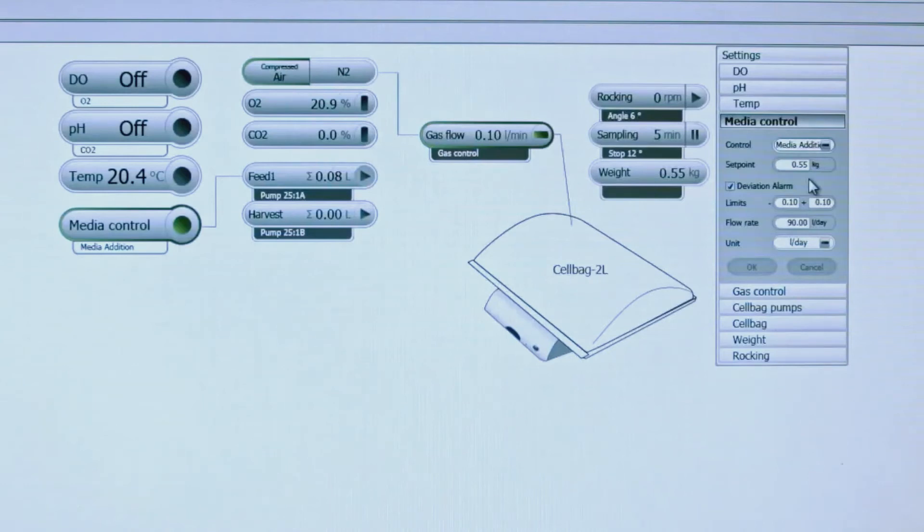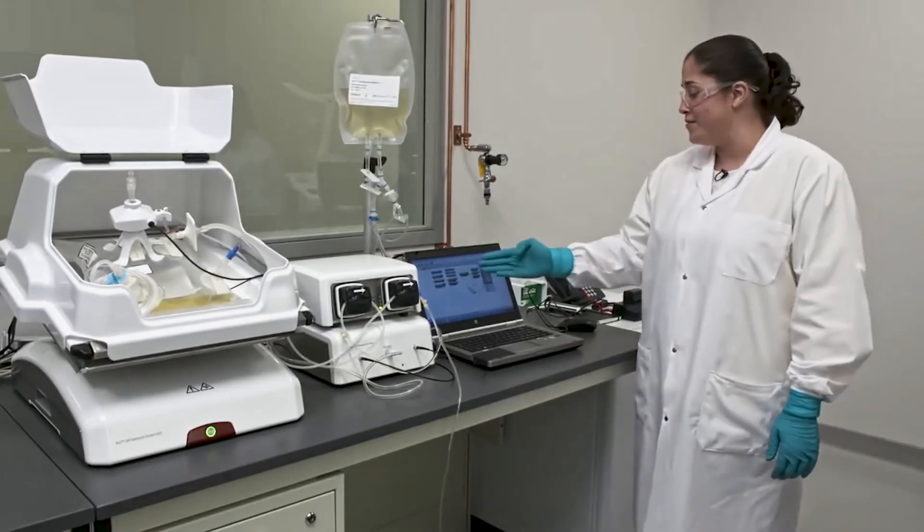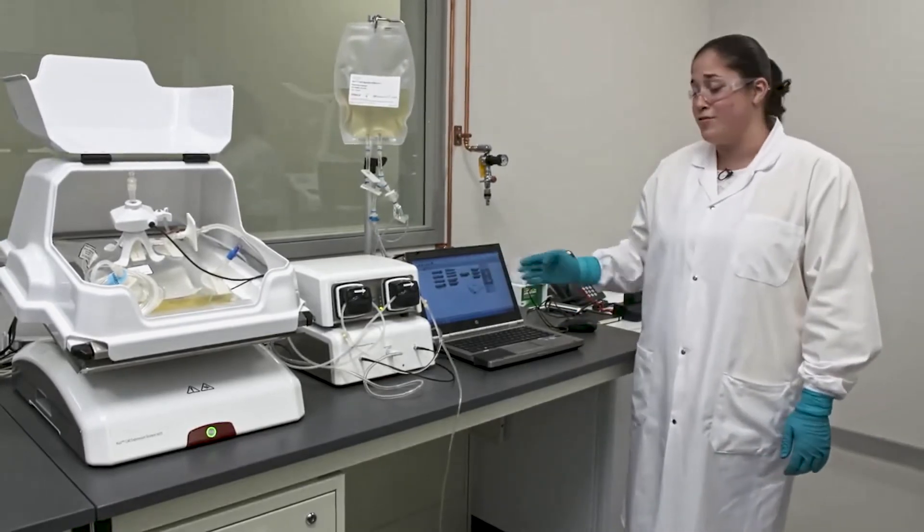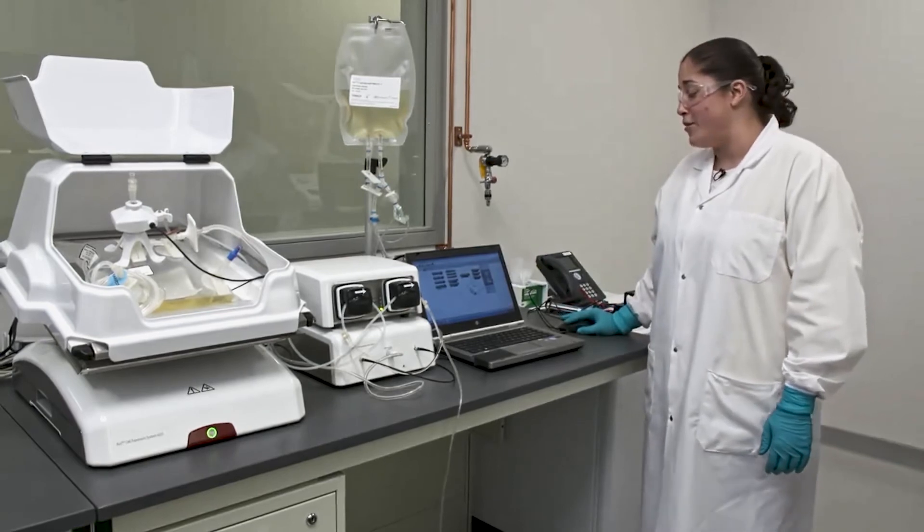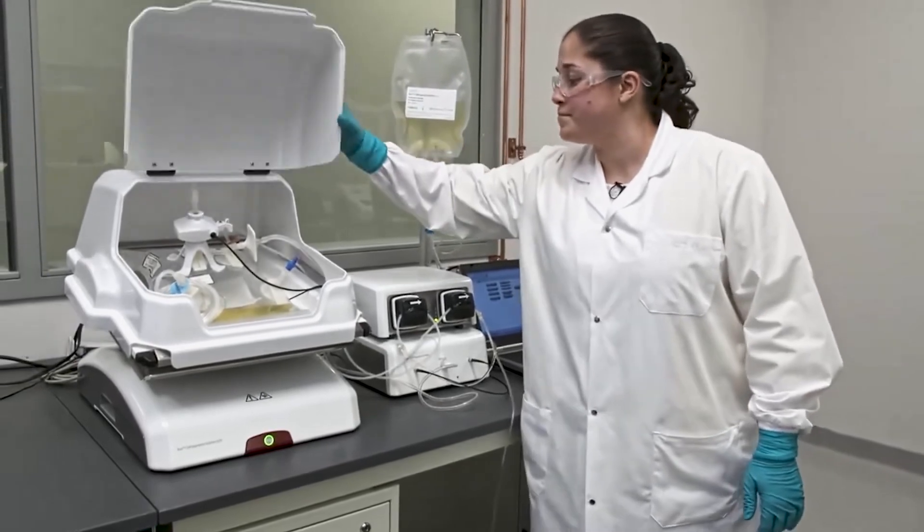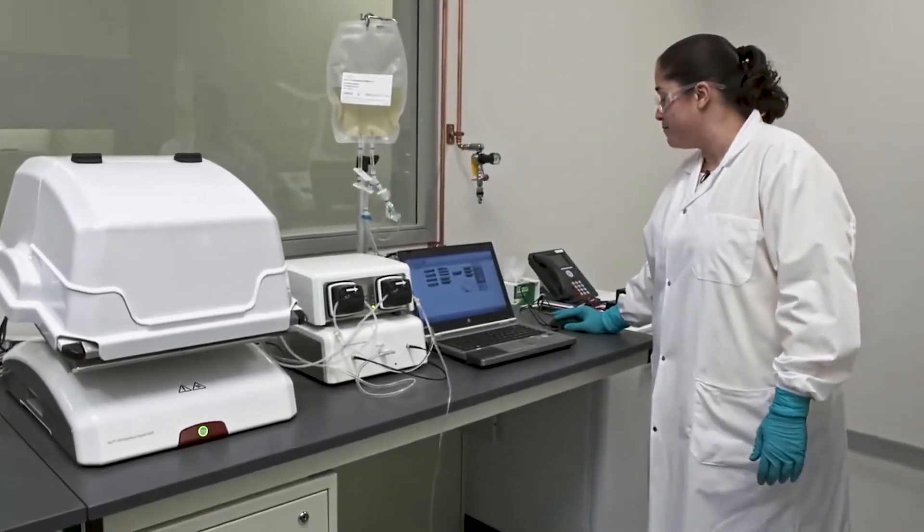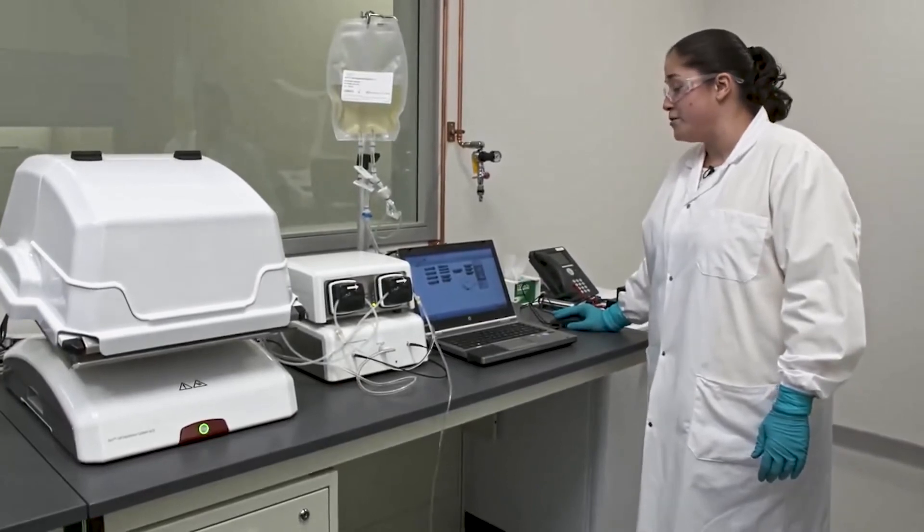Once media control has reached its target weight, which can be seen here, you can turn rocking on by clicking on the play button here as well as the temperature here. You can have your set points to whatever you would prefer. Once media control has completed, the pumps will turn off and you'll see that your weight set point is correct on Unicorn. You can then go ahead and turn off media control by clicking on the circle. You then want to close your cover and enable rocking by clicking the play button and turn on the temperature.